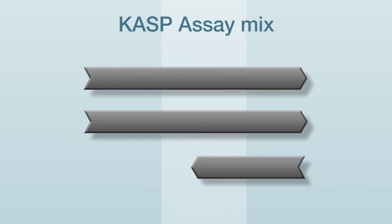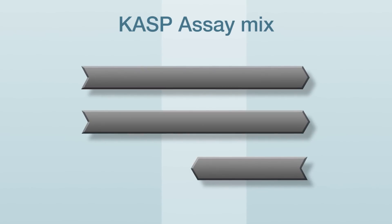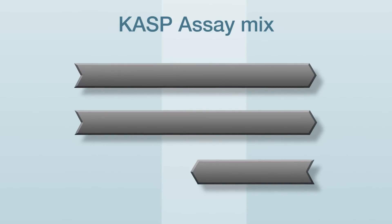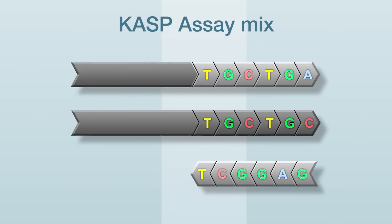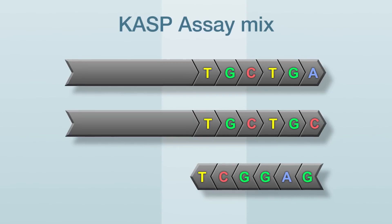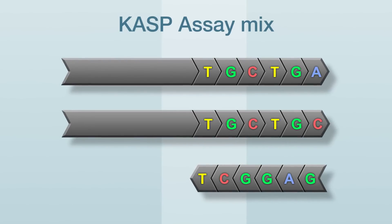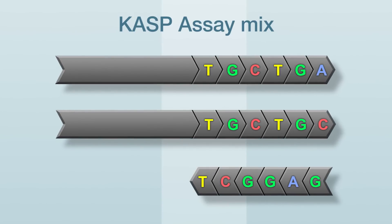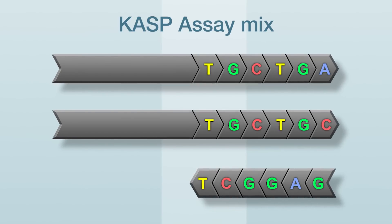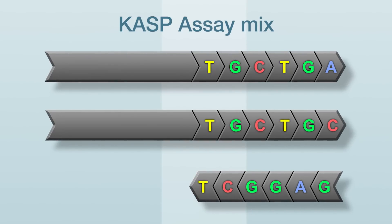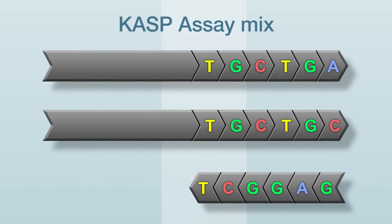All three primers in the CASP assay mix are simple unlabeled oligonucleotides. The three-prime part of both forward primers is complementary to the target DNA sequence. For a SNP assay, this region will differ at the three-prime end. Both allele-specific forward primers also include an additional string of bases not complementary to the target DNA. These bases are referred to as the tail sequence and play an important role in signal generation. Each allele-specific primer has a different tail sequence, referred to as tail X and tail Y.